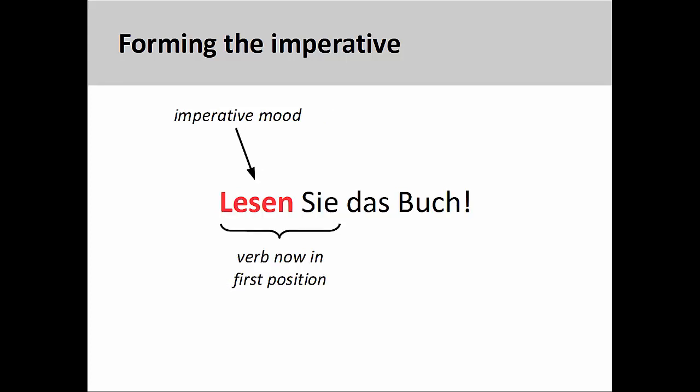To make this statement into a command, you simply need to put the verb in the first position, the formal pronoun 'Sie' in the second position, and add an exclamation point: 'Lesen Sie das Buch!' — Read the book. This sentence is now in the imperative mood.